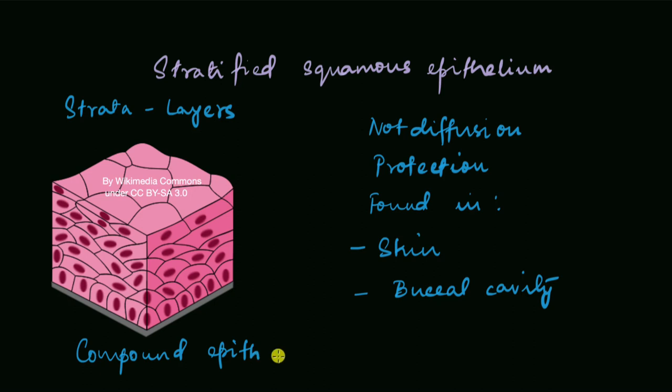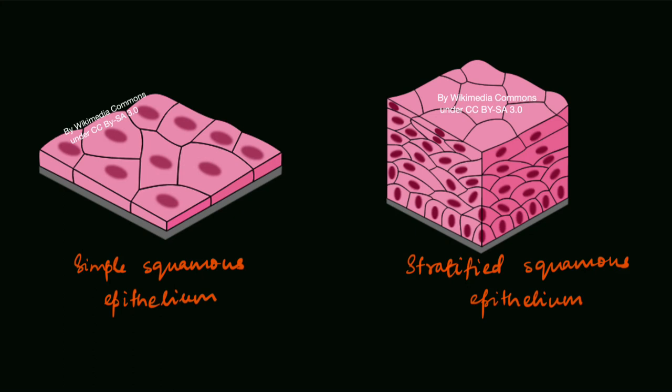As opposed to simple epithelium squamous epithelium, because it has many layers. We have looked at two types of squamous epithelium in this video: simple squamous epithelium and stratified squamous epithelium. The simple squamous epithelium is good for diffusion of substances, whereas stratified squamous epithelium is used mainly for protection.